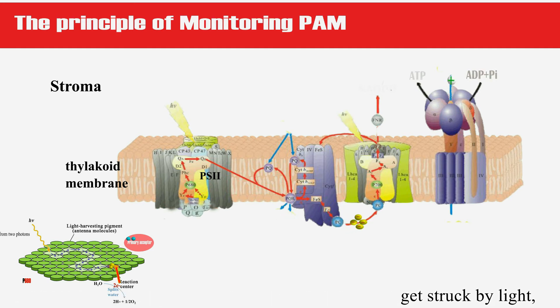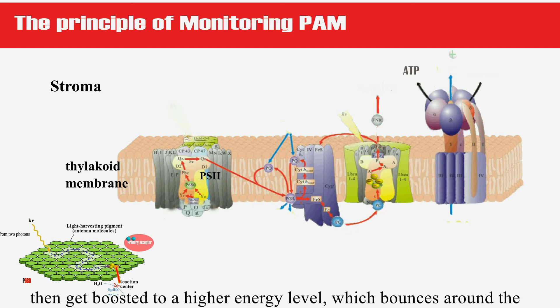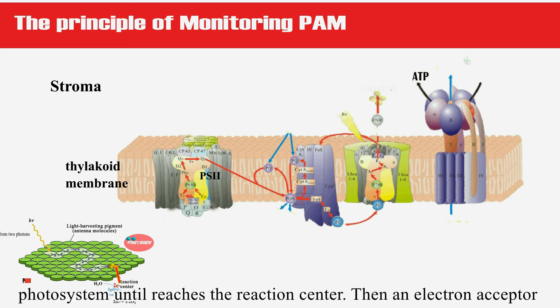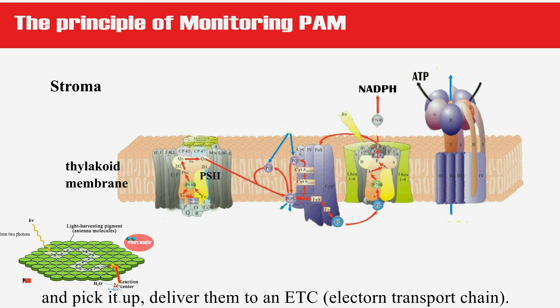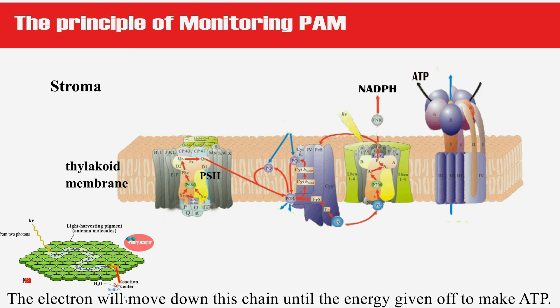This molecule gets struck by light, then gets boosted to a high energy level, which bounces around the photosystem until it reaches the reaction center. Then an electron acceptor comes and picks it up, delivers them to an electron transport chain. The electron will move down this chain until the energy is given off to make ATP.